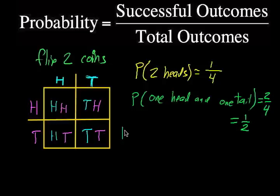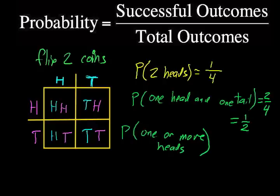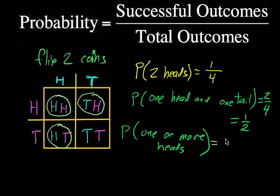You can actually also ask questions like, what's the probability of getting one or more heads? The probability of one or more heads. Here we're going to use another color just so we can highlight what's going on. We just want one or more heads. Is there one or more heads in this situation? Yes. I'm going to circle that. Is there one or more heads in this situation? Yes. Is there one or more heads? No, there's just two tails. Is there one or more heads? Yes. So the probability when you flip two coins of getting one or more heads is actually three outcomes, three successful outcomes, over four total outcomes.